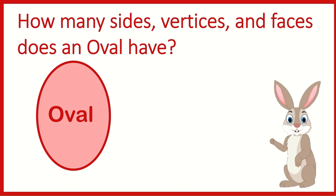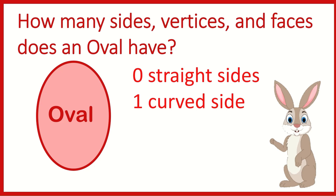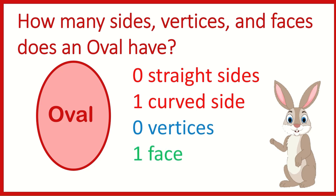How many sides, vertices, and faces does an oval have? An oval does not have any straight sides — it has one curved side. So it has zero straight sides and one curved side. Since an oval does not have any straight sides, it does not have any vertices. It has zero vertices. An oval is a 2D shape. That means it only has one flat face.